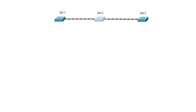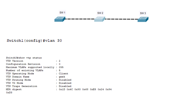Now when we create a new VLAN — VLAN 30 — on switch 1, the VTP update should be sent to switch 2 and switch 3. The new VLAN should be created automatically on switch 2 and switch 3. On switch 1, we create the new VLAN using the 'vlan 30' command, and switch 2 and switch 3 will create VLAN 30 automatically. We can use the 'show vlan' command on both switches to verify this, and the 'show vtp status' command to display VTP configuration information.